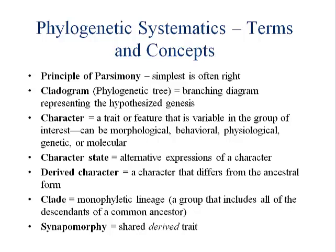Parsimony comes into play when we think about birds and bats — both have wings. The most parsimonious answer would be that they're closely related because they both have wings and both fly. But we know that's not true at all, considering bats are mammals and birds are not mammals. And bats aren't birds.